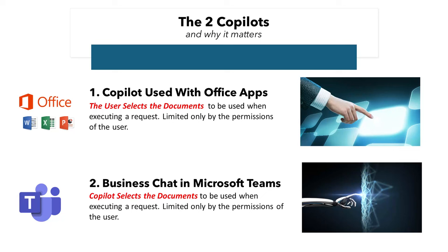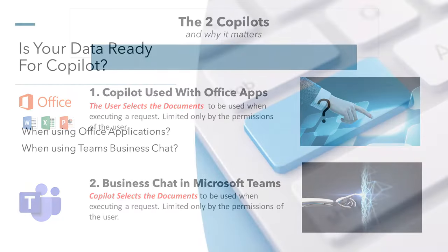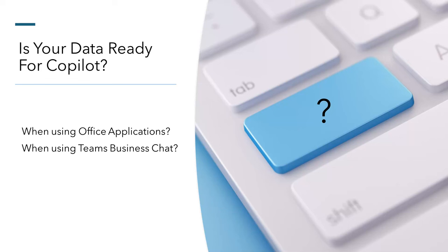By doing so, they can leverage Copilot's productivity benefits while maintaining strict control over sensitive information, mitigating risks associated with its use in collaborative environments. Understanding and managing these distinctions is crucial to prevent unintended data exposure and ensure data security. When using an Office application, each employee can pick and choose the specific documents they want to use. But when using Teams Business Chat, Copilot makes the decision on its own as to which documents to consider amongst all the documents that individual can reach.